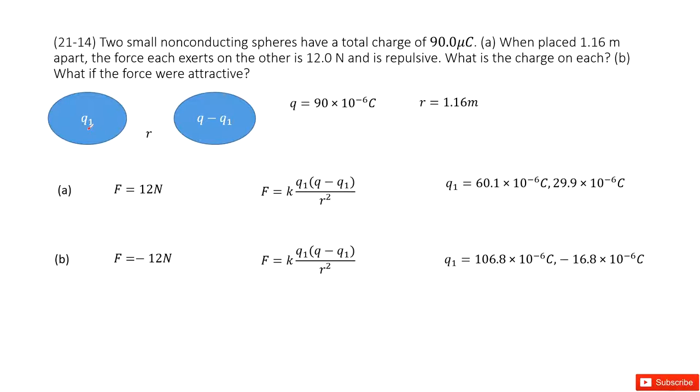We can see we have two particles, right? And the total charge is given as Q. And also, we know the distance between the charges is fixed as R, 1.16 meters.